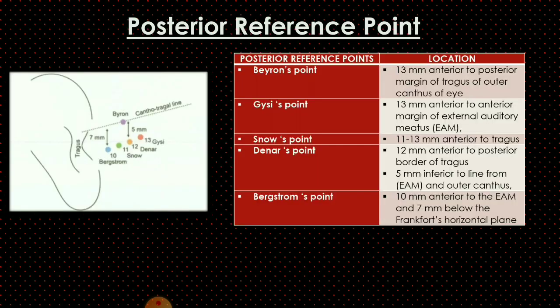Posterior reference points are always two in number — one on each side — while the anterior reference point is one, giving three reference points in total. The posterior reference points include: Beyron's point, which is 30 mm anterior to the posterior margin of the tragus from the outer canthus of the eye; Gysi's point, which is 13 mm anterior to the external auditory meatus; Snow's point, which is 11 to 13 mm anterior to the tragus; Denar's point, which is 12 mm anterior to the posterior border of the tragus and 5 mm inferior to the canthus-tragus line; and Bergström's point, which is 10 mm anterior to the external auditory meatus and 7 mm below the Frankfort horizontal plane.